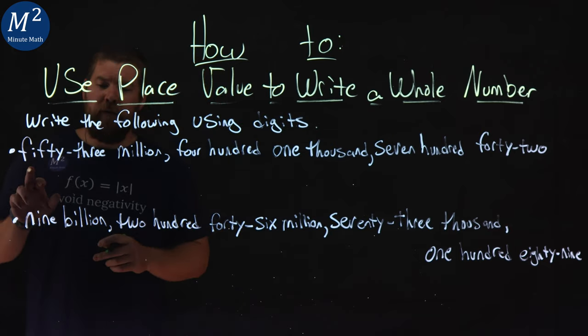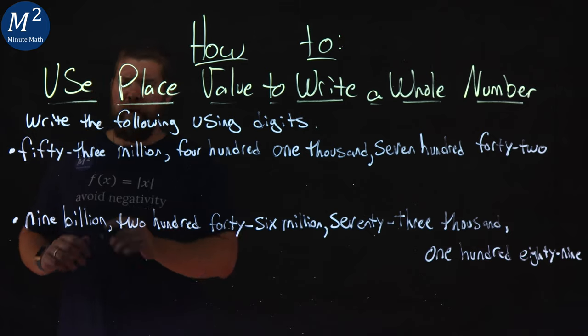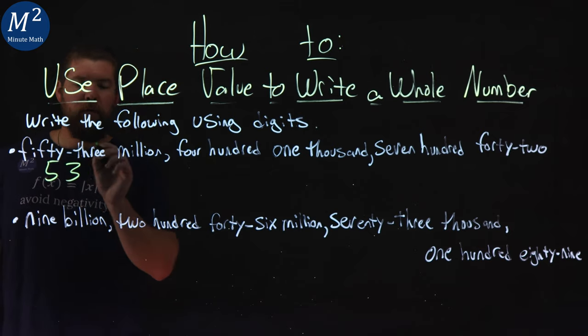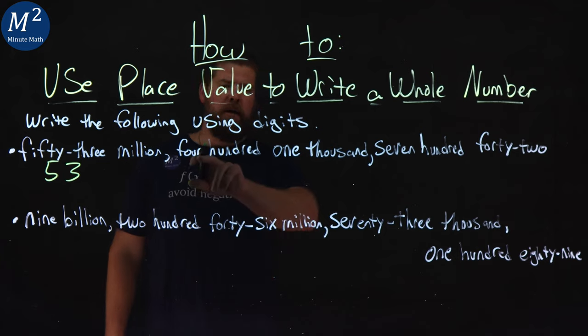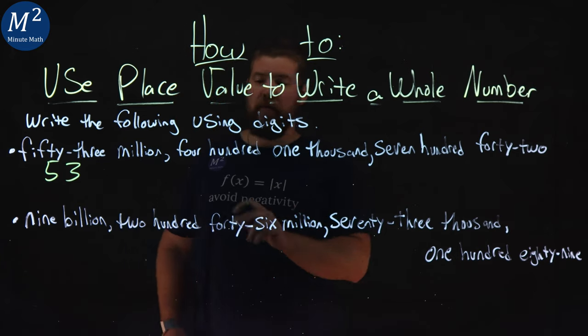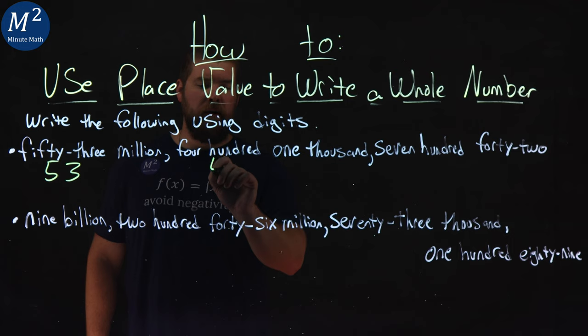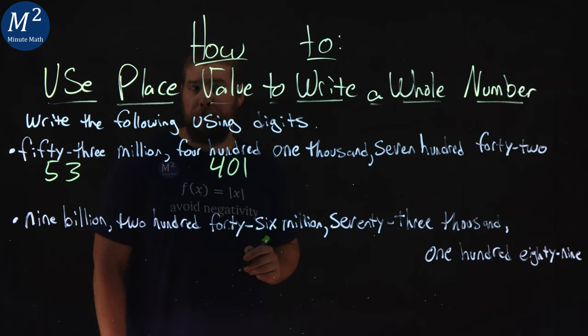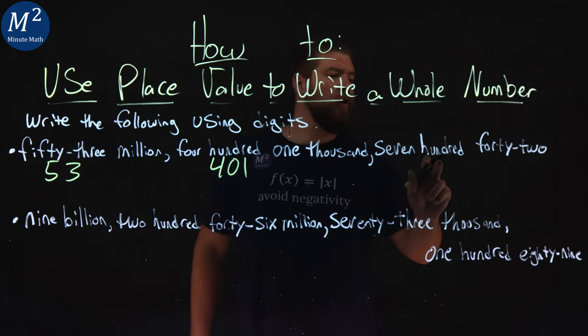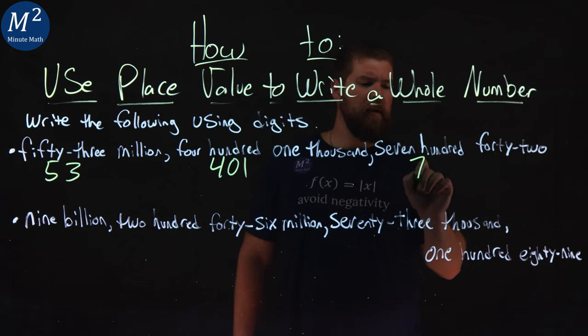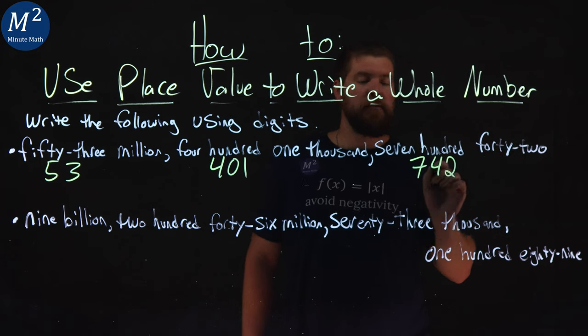So in the millions, the first one here, 53 million. I'll write the number 53 for right now. Next one, 401,000. Ignore the thousand, just 401. I write it like this, 401. Lastly, 742. It's just 742 as such.